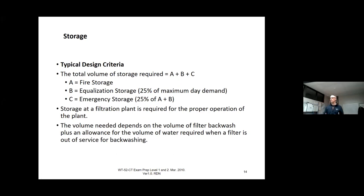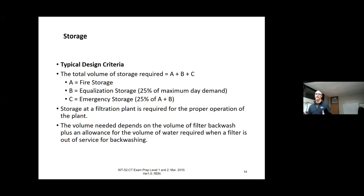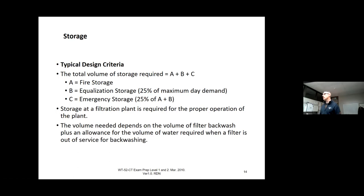How they calculate this is interesting — it's A + B + C. A is fire storage, the number one design criteria. B is equalization at 25% of the maximum day demand — the most water you can put out for that day. C is emergency storage at 25% of A + B. To properly size your storage facility you have to look at all these factors, including volume for filter backwash, because that water comes out of your storage and is part of your demand.